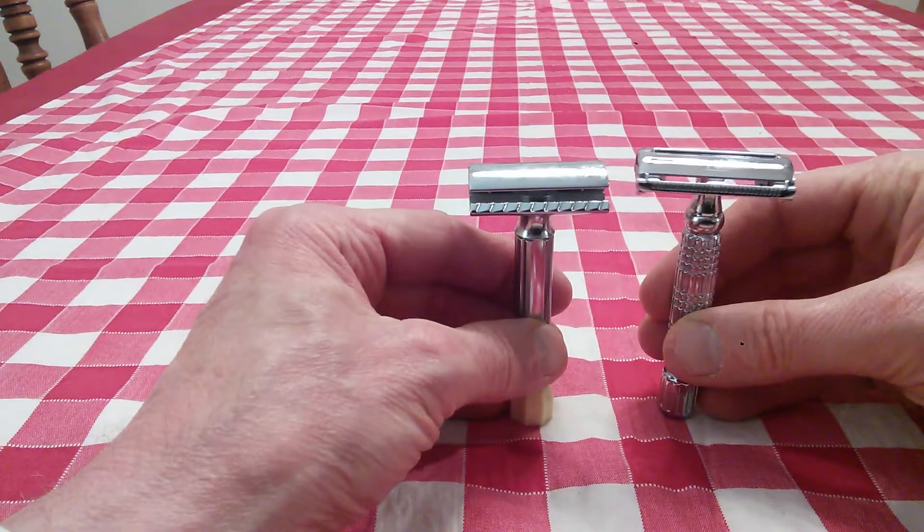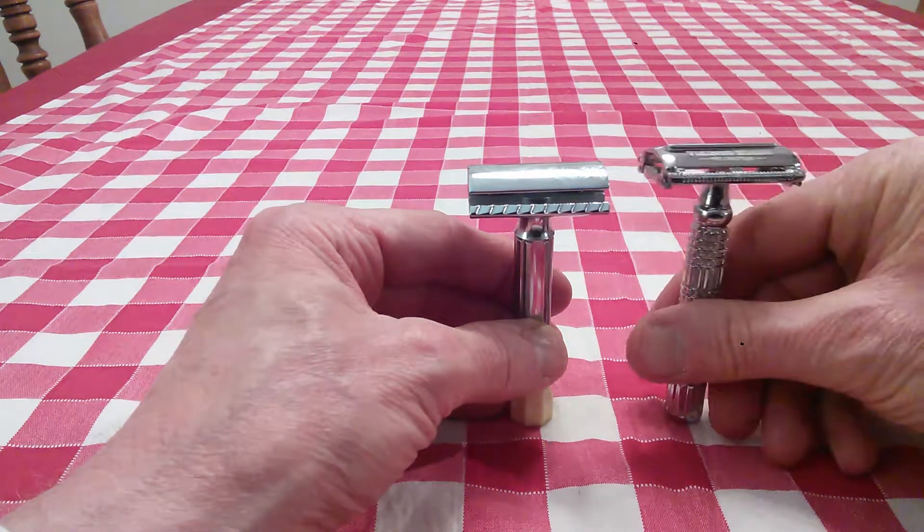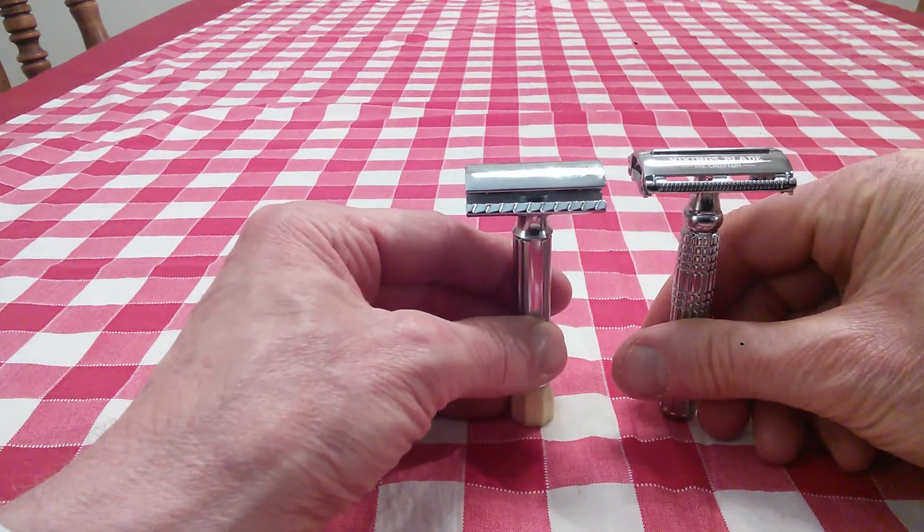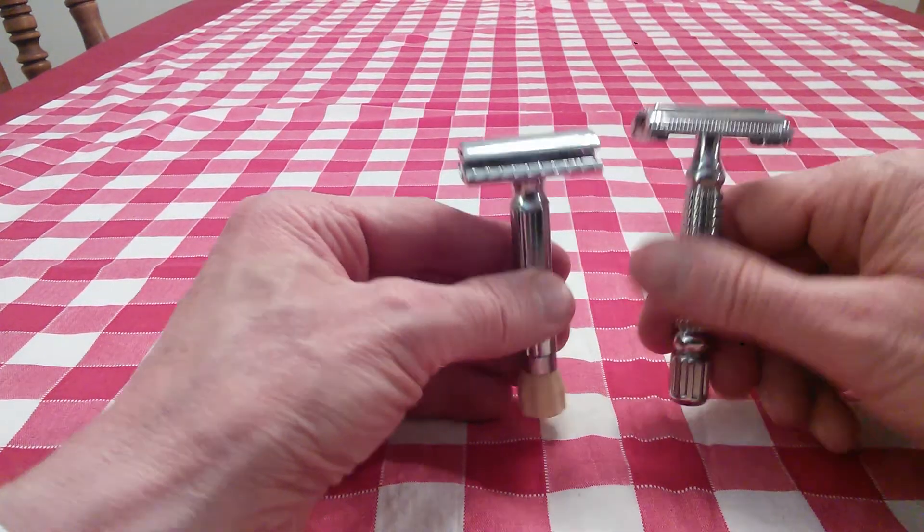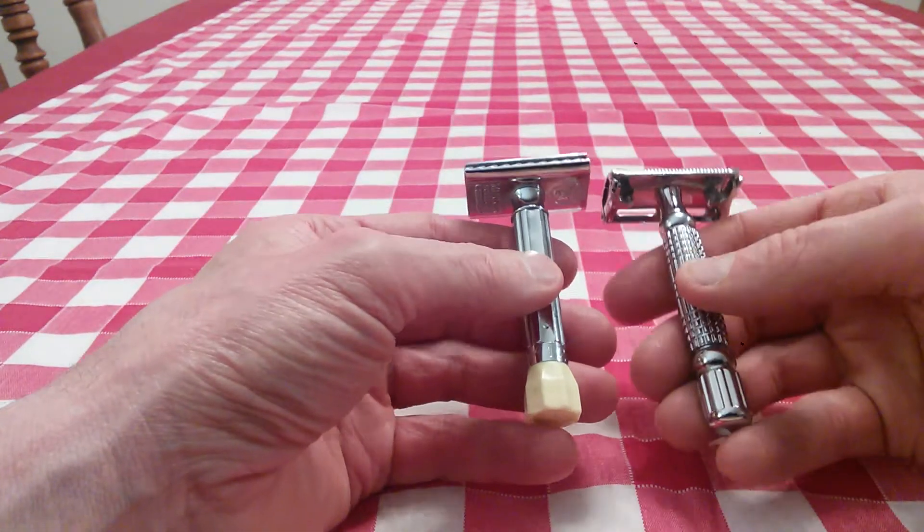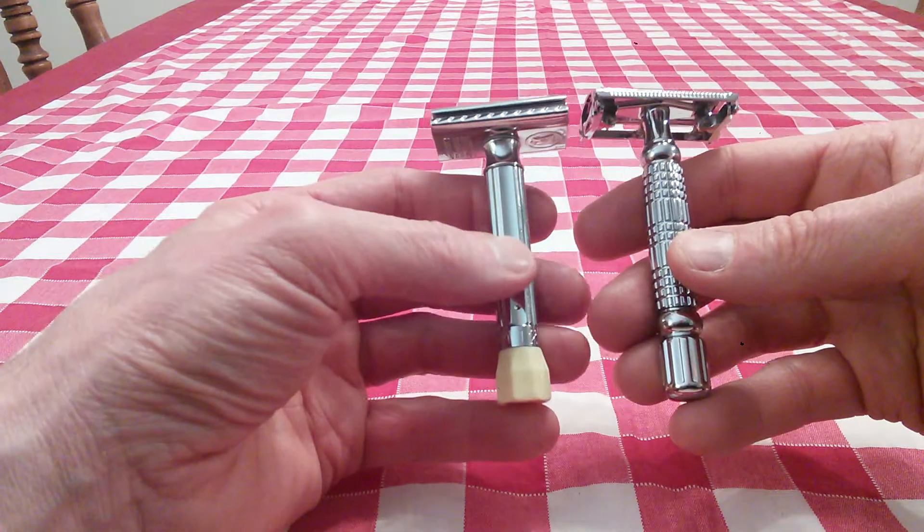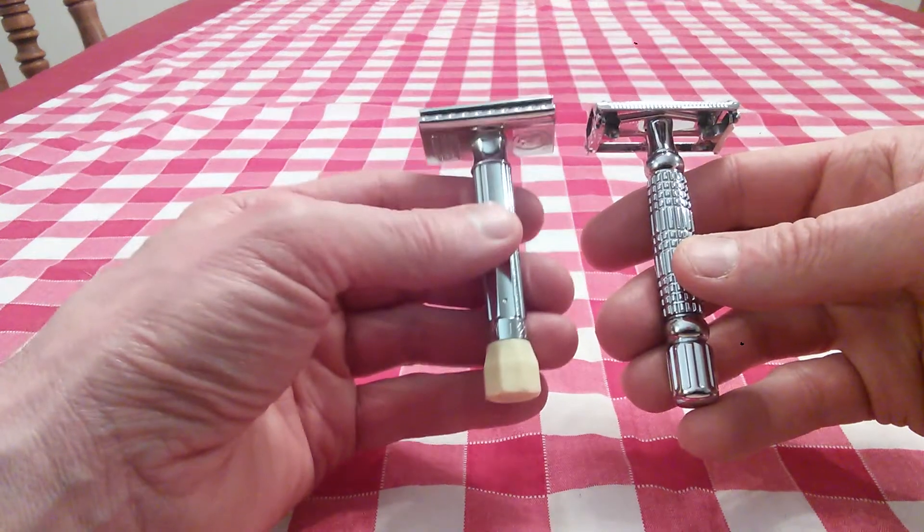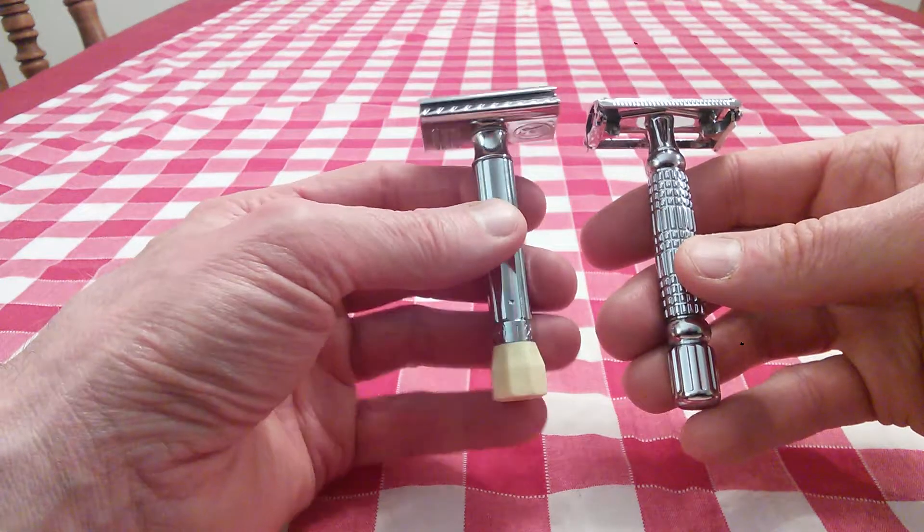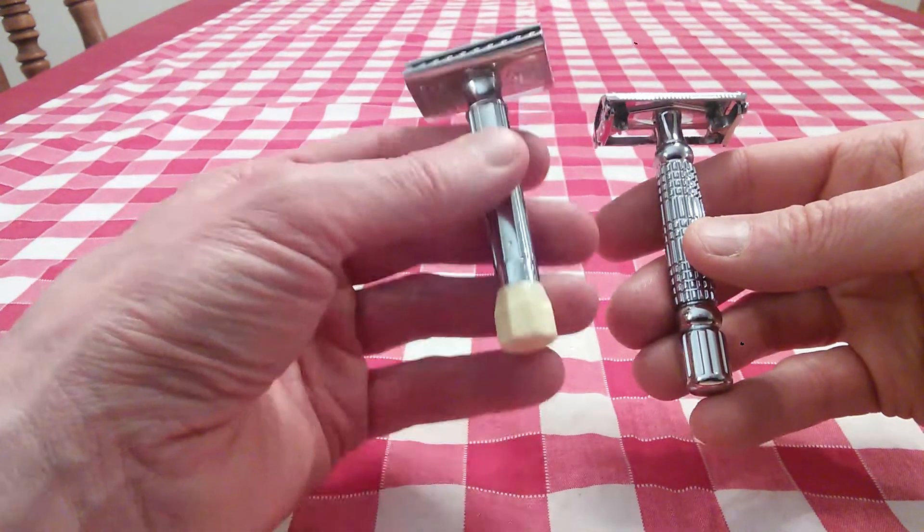Here it is next to my Vikings Blade Chieftain. You can see the Chieftain is a little bit taller. It's about the same thickness and handle, but I give a slight edge to this Merkur Progress. And the Merkur Progress is just slightly heavier.